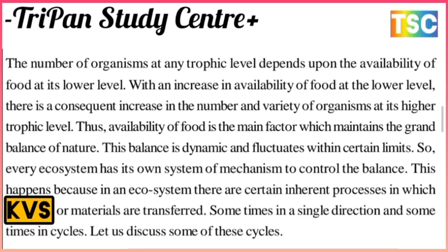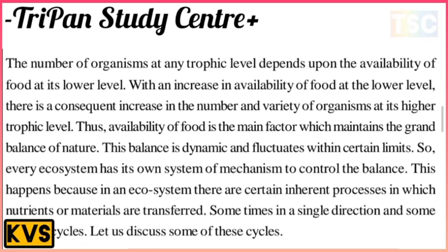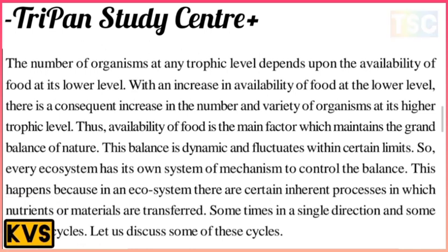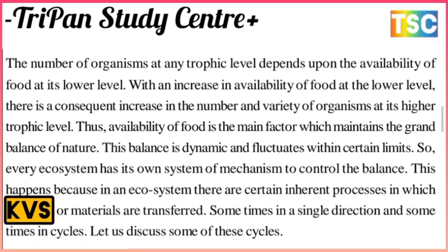The number of organisms at each trophic level depends upon the availability of food at the lower level. With increasing availability of food at the lower level, there is a consequent increase in the number and variety of organisms at higher trophic levels. This availability of food is the main factor that maintains the grand balance of nature — a dynamic balance that fluctuates within certain limits. Every ecosystem has its own mechanism to control this balance.